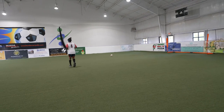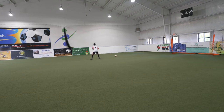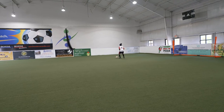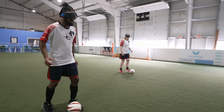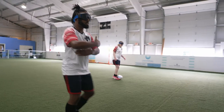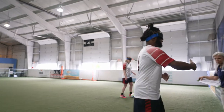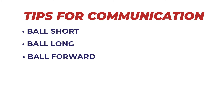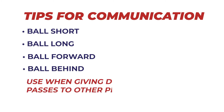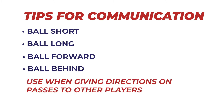Keep going, shuffle to the right, stop, and go forward. 'Go to' means to go towards the ball. 'SB' means sideboard — an important way for athletes to orient to the field. Sideboard ball, short ball, long ball, forward ball, or ball behind are all ways of giving directions on passes to other players.